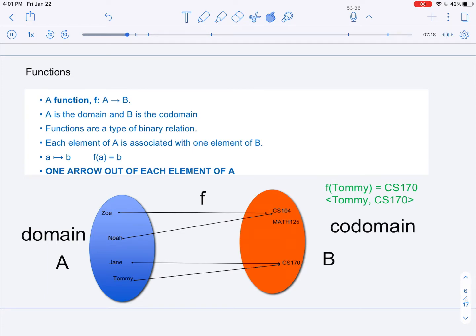We can denote this as an arrow of A going to B or f(A) equals B. The important takeaway is that every element in the domain will have one arrow coming out of it mapping to a point in the codomain.